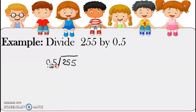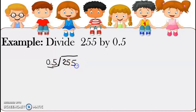Begin natin. So nandito yung decimal point niya. So sabi natin kung anong ginawa mo sa labas, gawin mo rin sa loob. So since nag-move tayo here, from here to here, so yung decimal point ng 255 — this is a whole number — is found dito. So lahat ng whole number lagi nandiyan ang decimal point. So move din natin siya ng once.